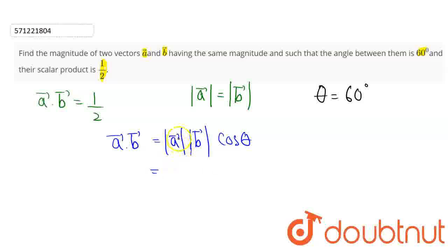Now here we have been given that these magnitudes are equal, so that means this will be mod of A vector square and I can take cos theta to the left side. So this will be A vector dot B vector divided by cos theta.